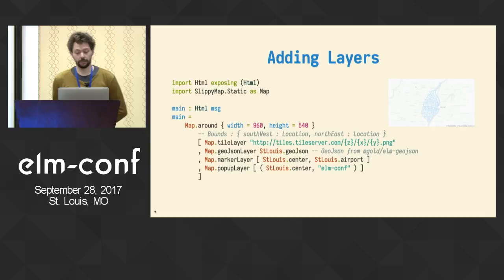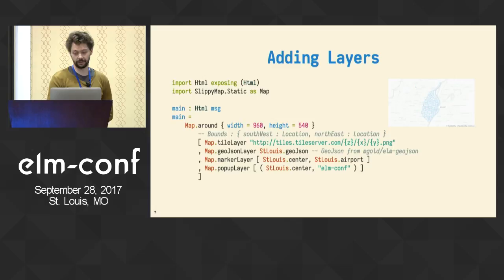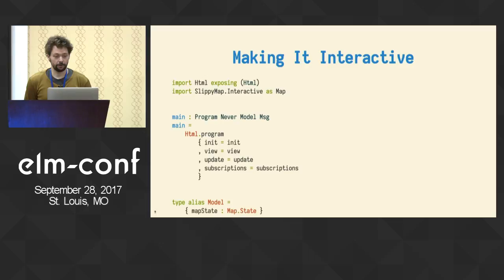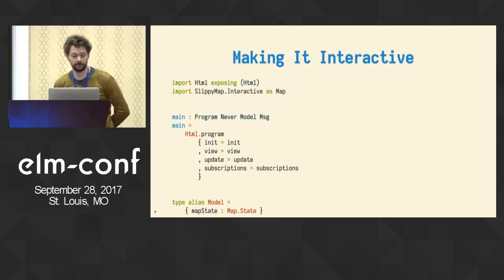All those layers are implemented in different modules, but the slippy map static module re-exposes those layers in a standard default configuration. But a static map is often not what you want — it's good to get started and to get a feeling for what you can do, but usually you want an interactive map, and there's an interactive map module for that.